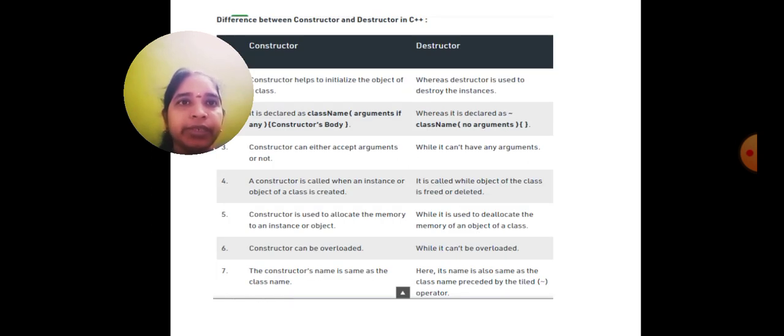Constructor and destructor have differentiations. Constructor is declared as class name, argument if any, constructor body, whereas destructor is declared as class name with no arguments. A constructor can either accept arguments or not, while it can't have any argument.